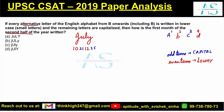The odd terms will be in capital, so U is in capital and Y is in capital. The even terms are in lowercase, so J is in small and L is also in small. Looking at the options, the fourth one is the correct option. I hope this helps.